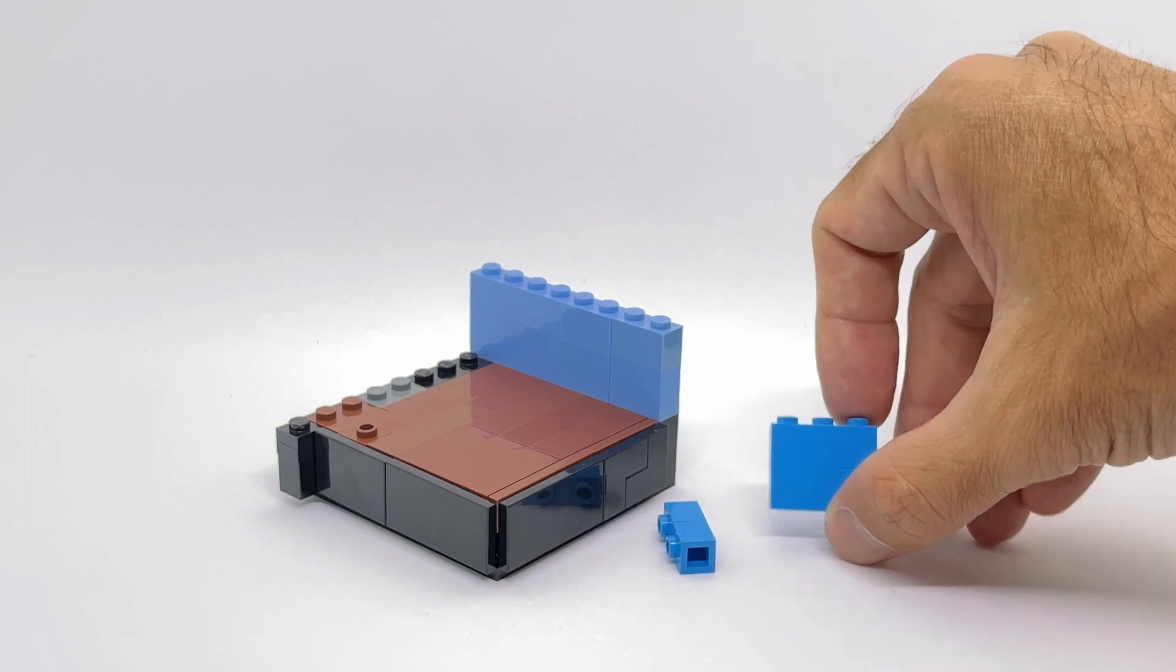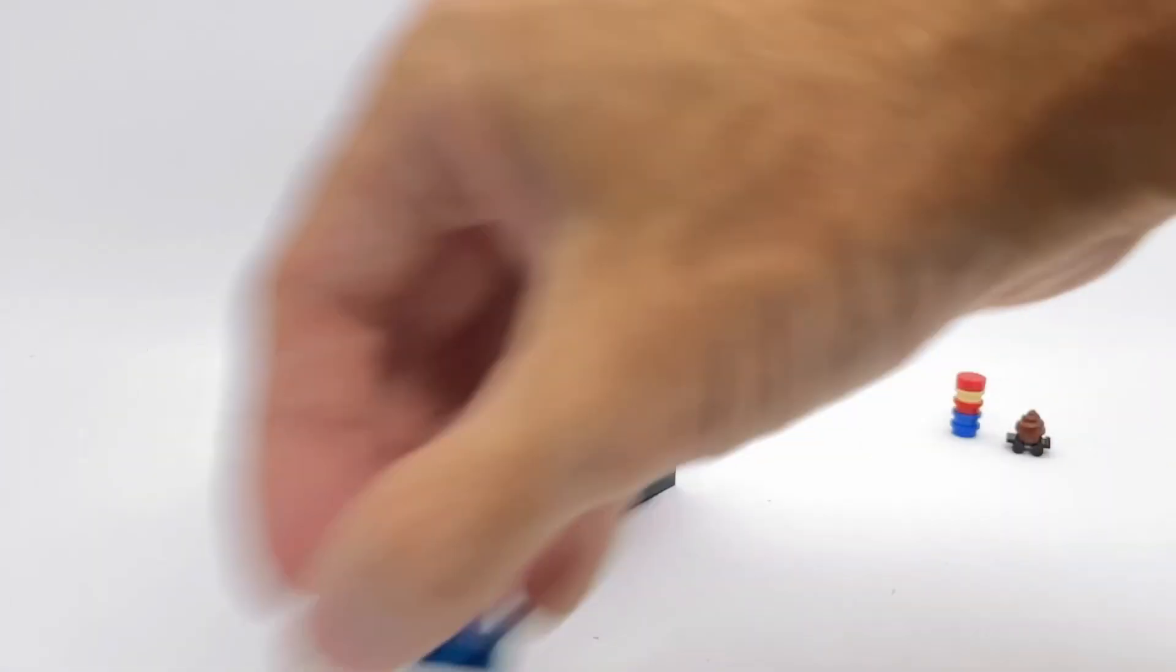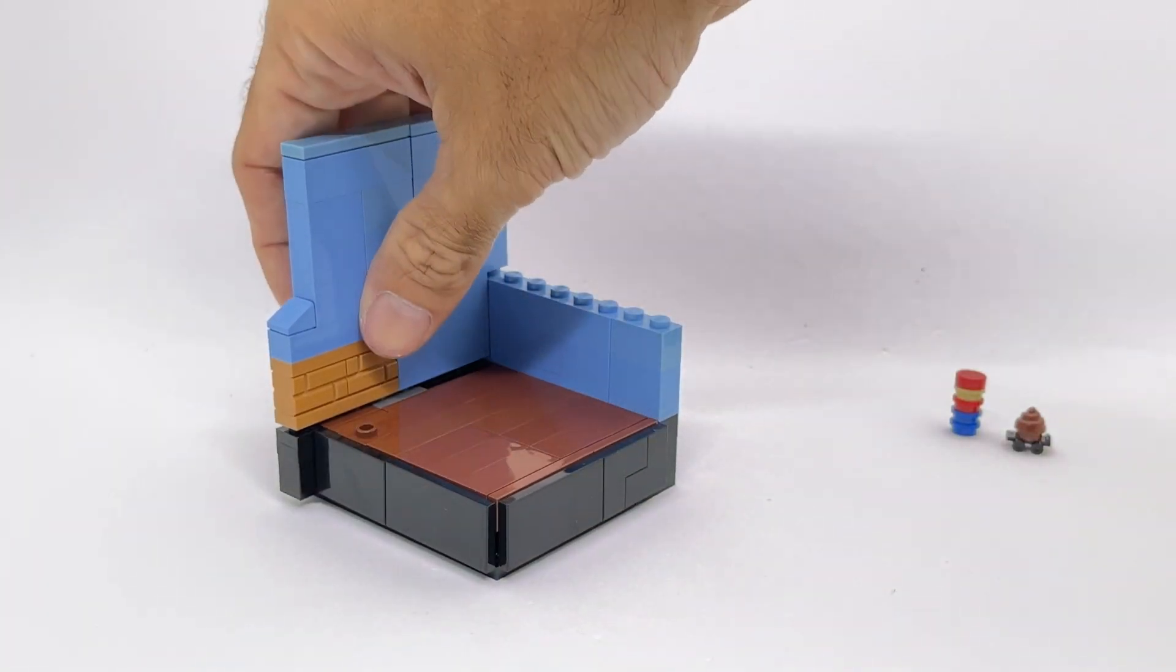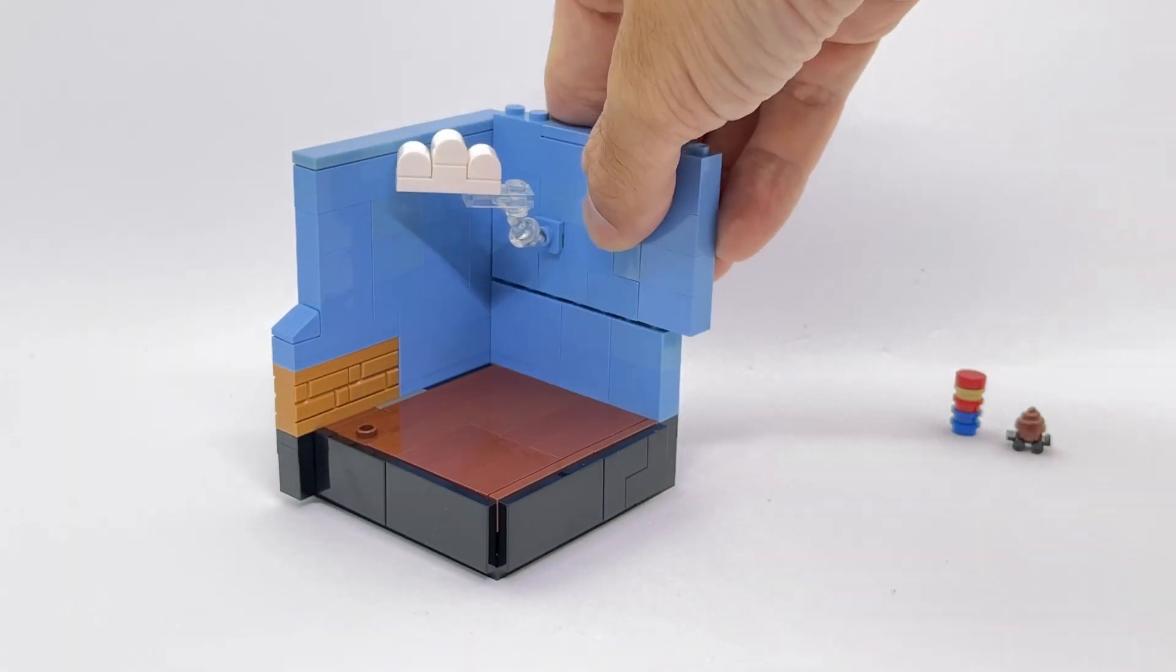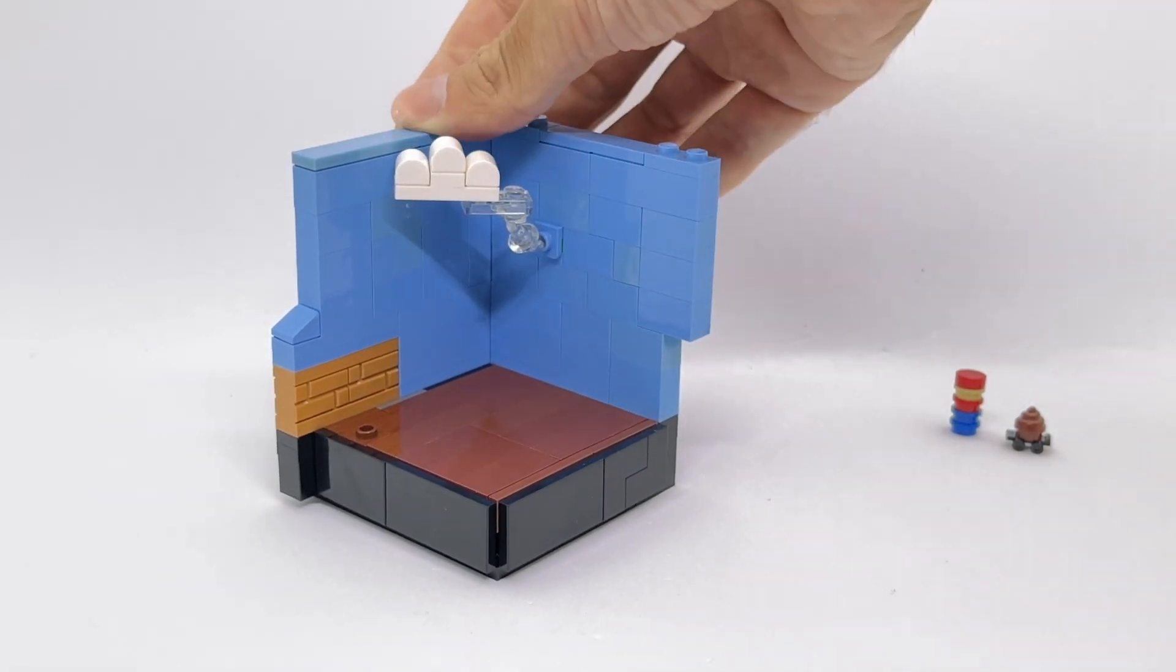I actually wanted to use this one, but I quickly realized that I didn't have enough parts in this shade of blue. So this was the second best choice. Here we are gonna build up the other side wall and on the right side you can see that I'm already starting to add a little bit of details.